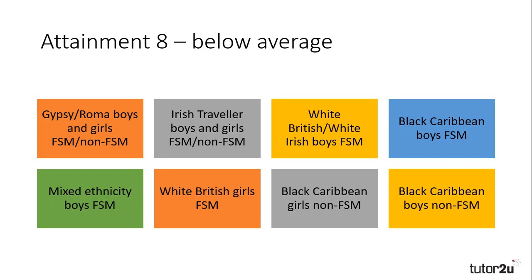The below average groups compared to others of the same social class and gender: Gypsy and Romani Travellers are well below average regardless of class or gender. Black Caribbean and mixed ethnicity boys on free school meals underachieve, as do white boys and girls on free school meals. Black Caribbean girls not on free school meals are below average, though very close to average for those on free school meals, while mixed ethnicity girls perform better than average for their social class.